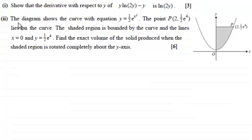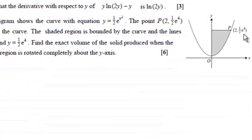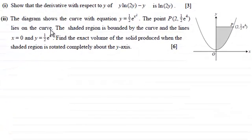But in the second part we're given that the diagram here shows the curve with the equation y equals a half e to the power x squared. And the point P with coordinates 2, half e to the power 4, lies on the curve.